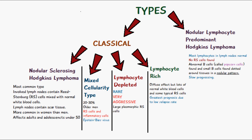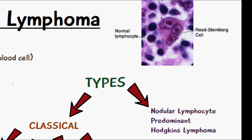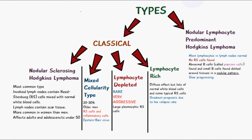You can see a diagram of what a Reed-Sternberg cell looks like here. The lymph nodes contain these Reed-Sternberg cells mixed with normal white blood cells as well, and the lymph nodes also contain scar tissue, which is why it has the name sclerosing.